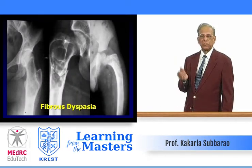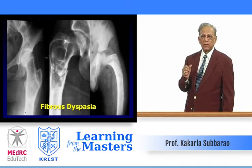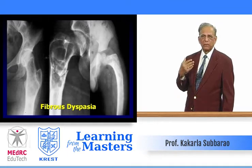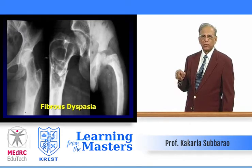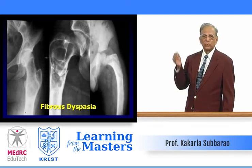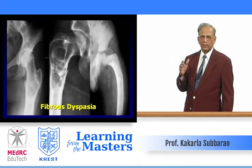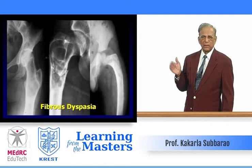Then we come to fibrous dysplasia. This is a fibrous aberration of a developing bone. It could be monoostotic or polyostotic. When it is polyostotic, particularly in girls, if there is sexual precocity and skin pigmentation, it is called Albright syndrome. In monoostotic fibrous dysplasia, it is usually localized, generally in the tubular bones, with a rind surrounding it and a smoky or ground-glass matrix appearance. Commonly it occurs in the neck of the femur and may produce coxa vara, coxa valga, or the so-called shepherd's crook deformity.